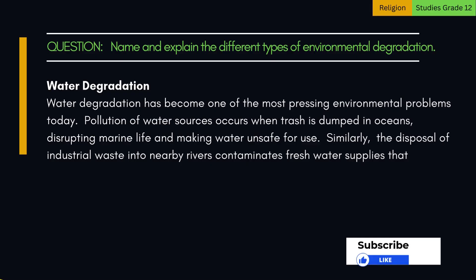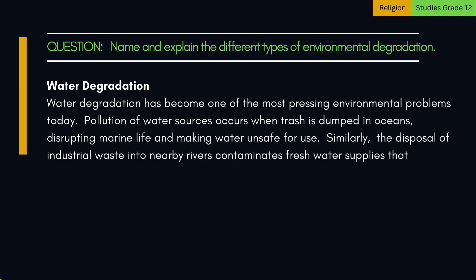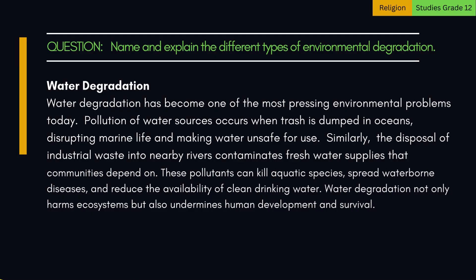Similarly, the disposal of industrial waste into nearby rivers contaminates fresh water supplies that communities depend on. These pollutants can kill aquatic species, spread waterborne diseases, and reduce the availability of clean drinking water. Water degradation not only harms ecosystems but also undermines human development and survival.